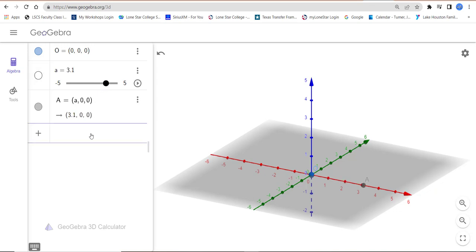I will do the same with a y-coordinate, again just filling in B, and then as soon as you hit enter, I get this nice variable with a point B that is sliding on the y-axis.